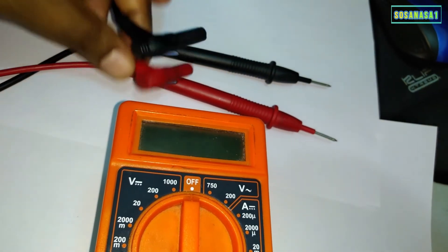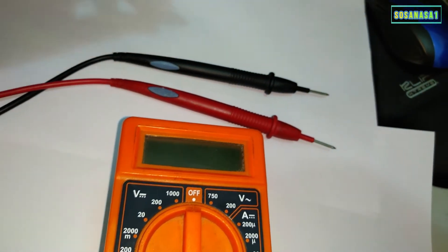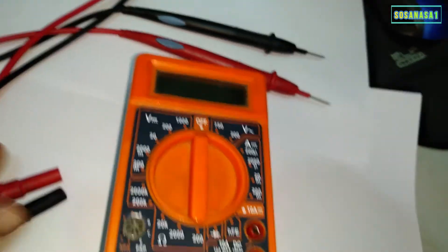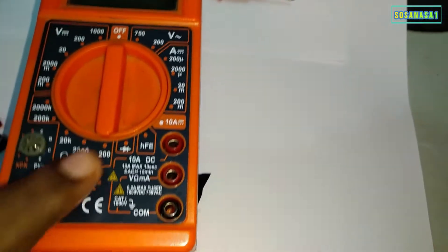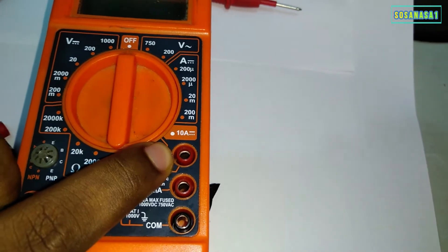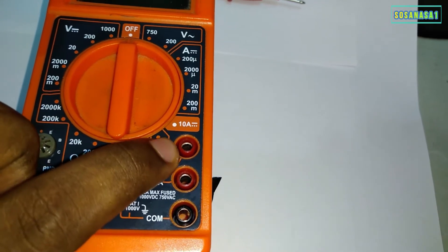The colors are important because here on the multimeter, if you see, this port is red and this is black.